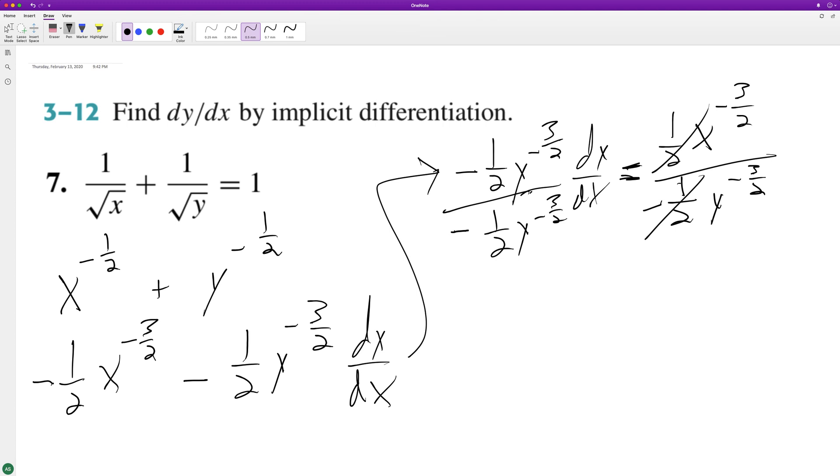So it becomes negative. And the cool thing is we can put the y on top and the x on bottom, and the exponents become positive. So this is negative y raised to the three halves over x raised to the three halves. And that's it.